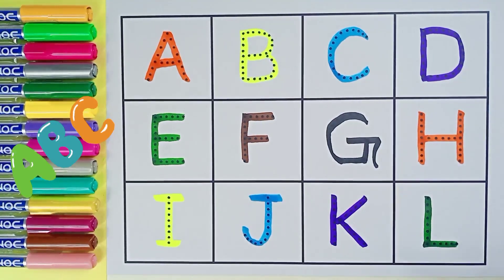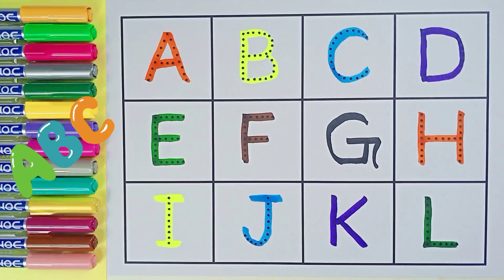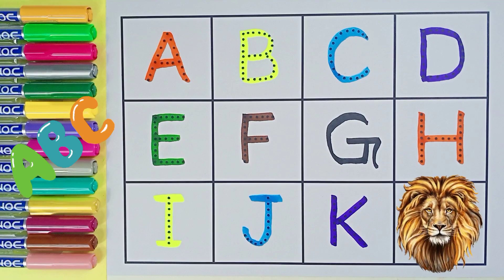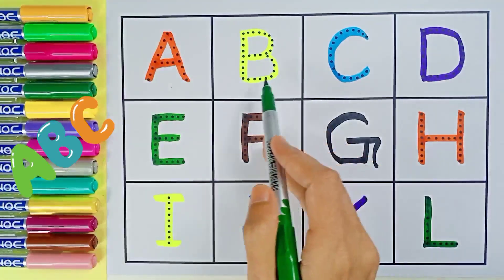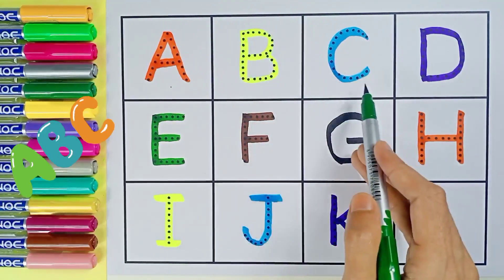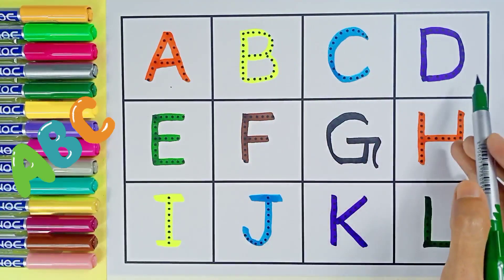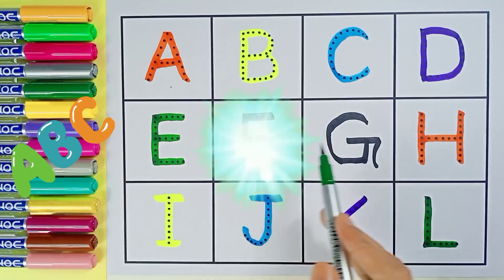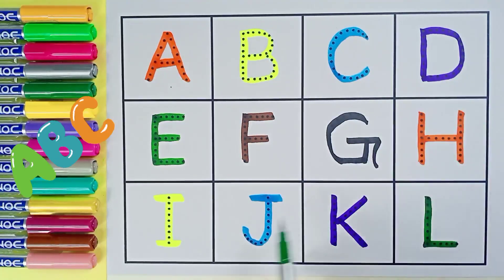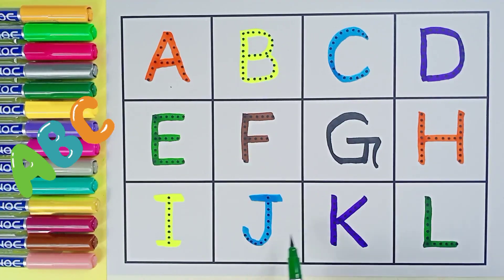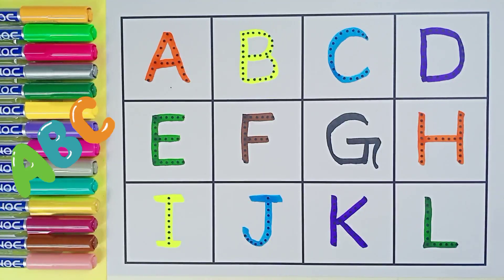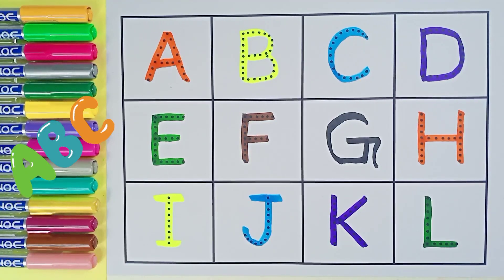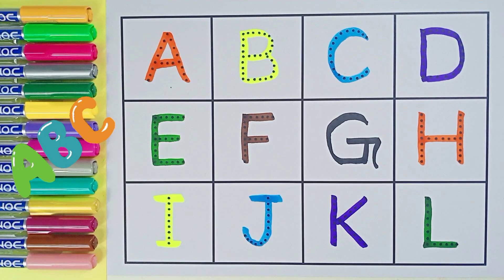L, L for lion. A, B, C, D, E, F, G, H, I, J, K, L.